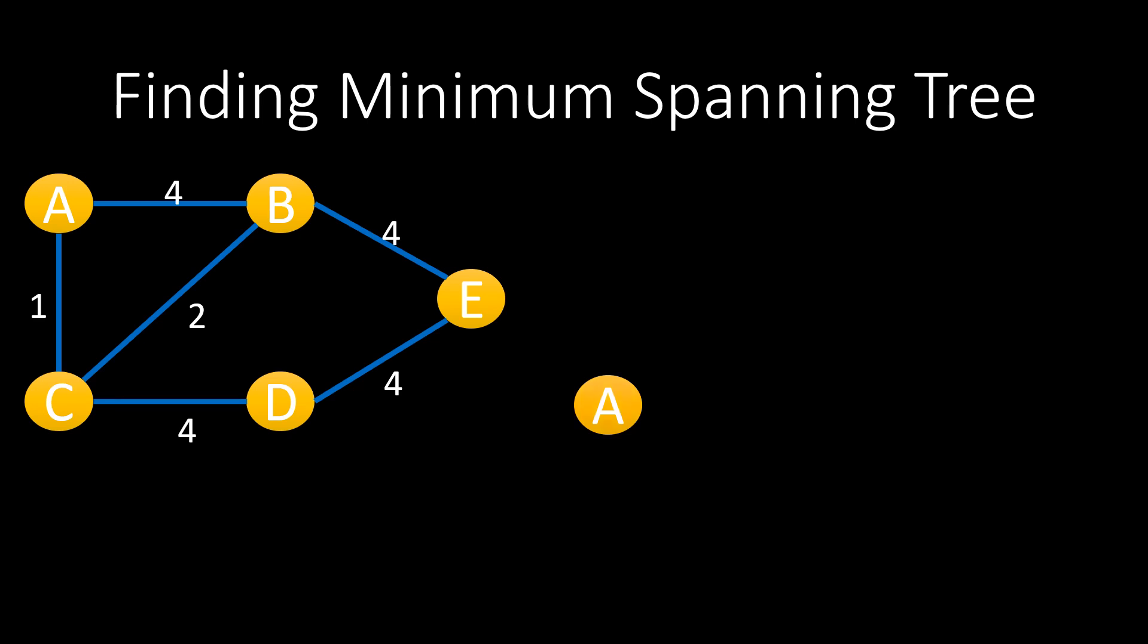From A we can reach B and C. The weight of each edge becomes the distance between the two vertices. We need to compare the two edge weights and select the one that is minimum. So we selected vertex C and then from C we can reach B and D.